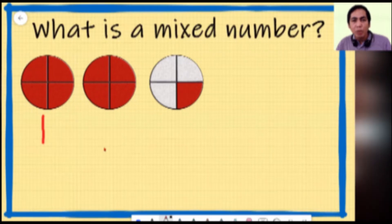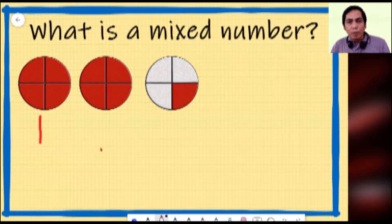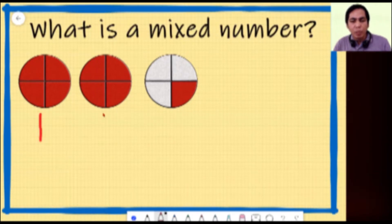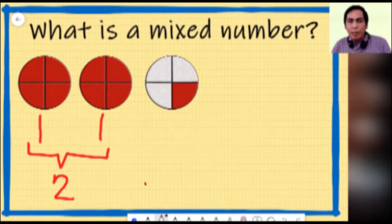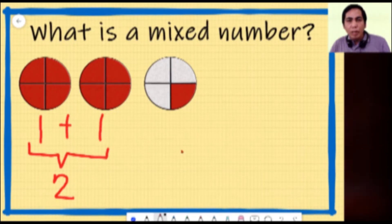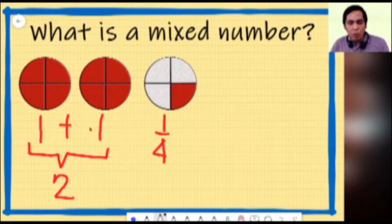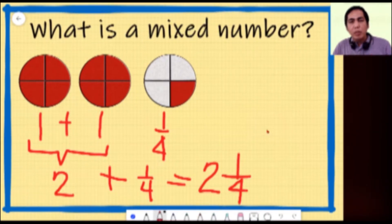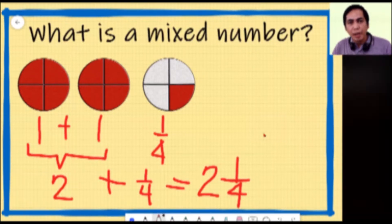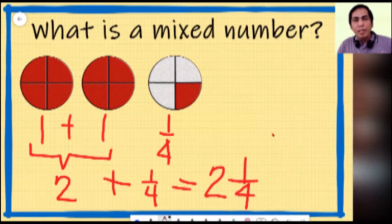The same with the second circle — all four parts are shaded with red, so one whole of the second circle is also shaded. All in all we have two wholes shaded with red. But looking at the third circle, only one part is shaded, and the fraction representing that part is one fourth. So we have two plus one fourth, giving us two and one fourth.